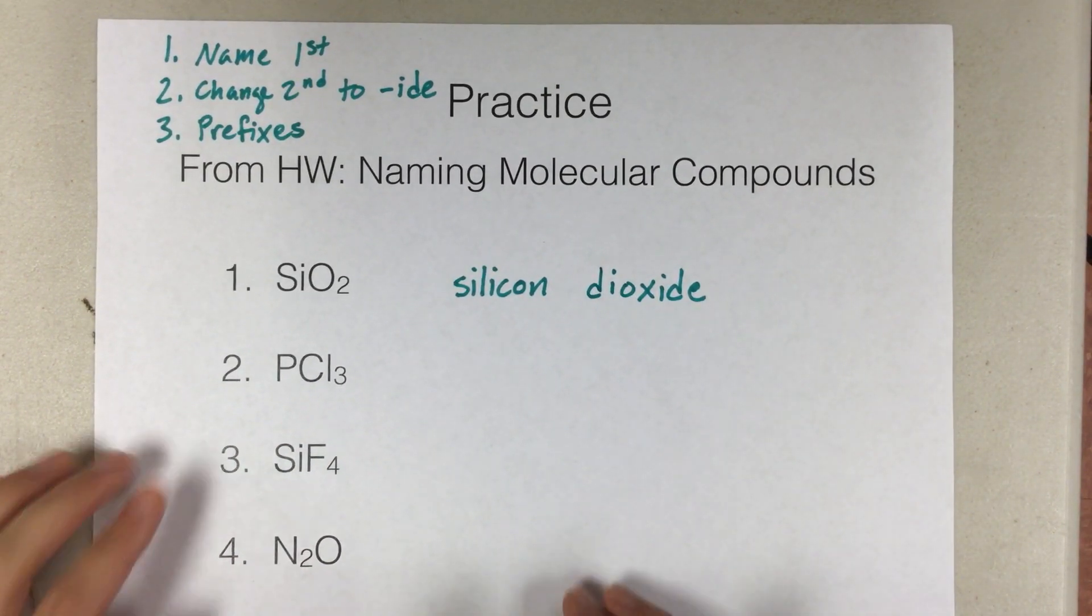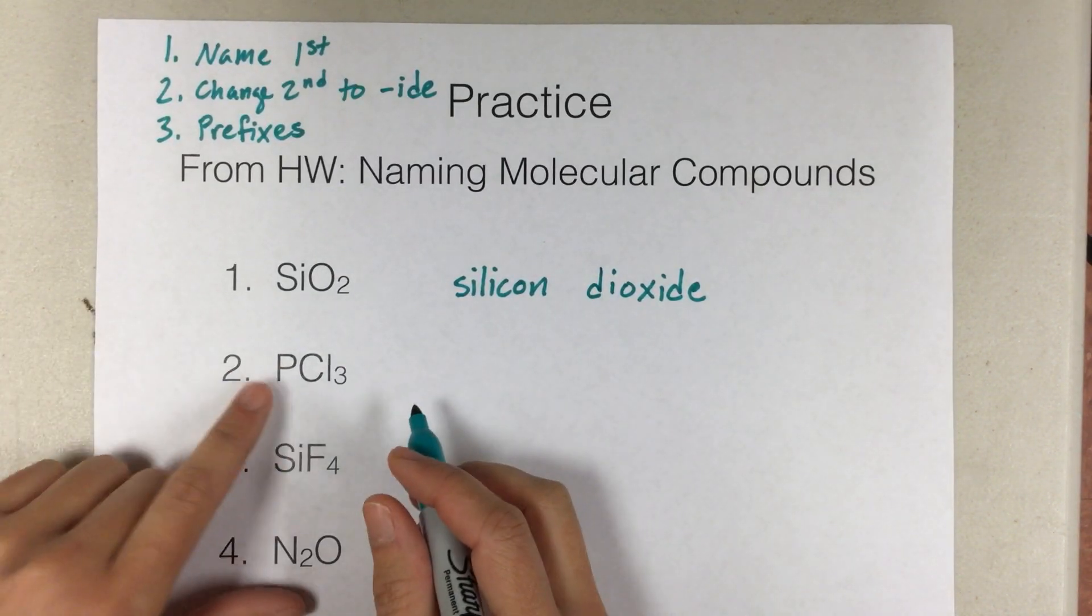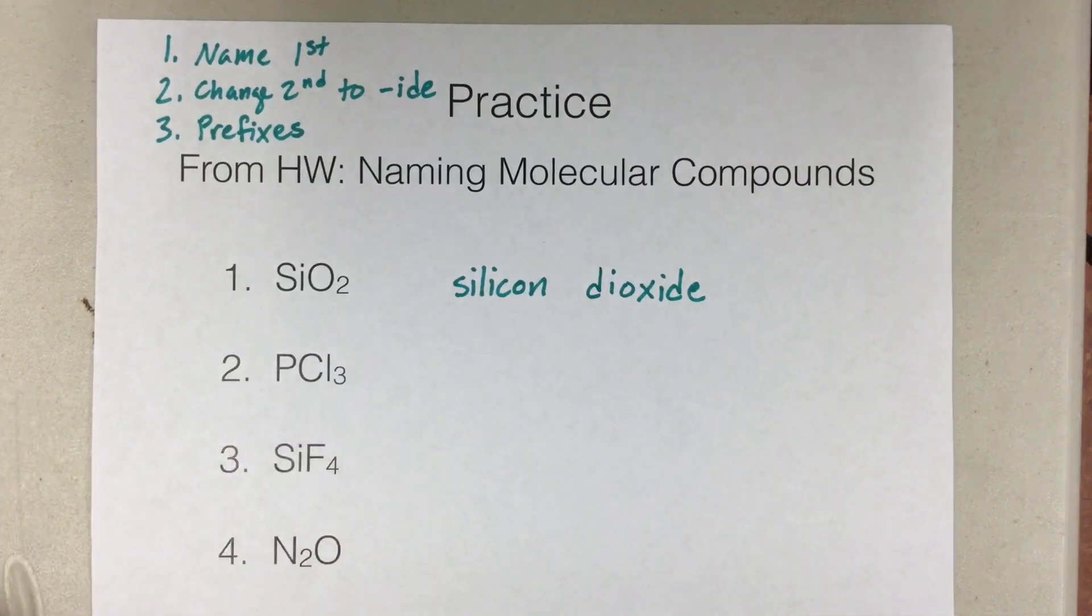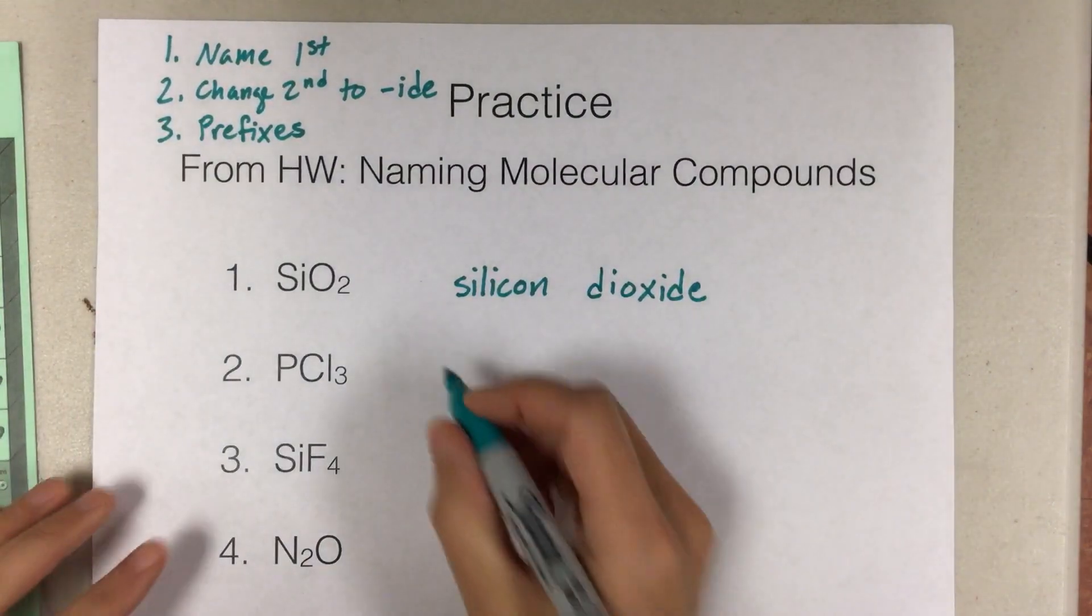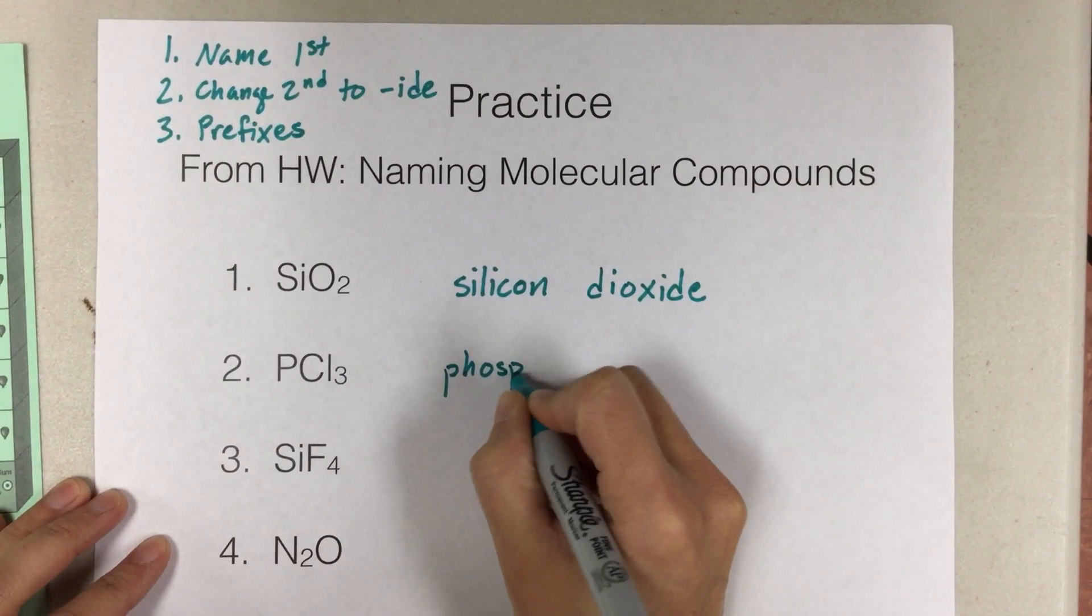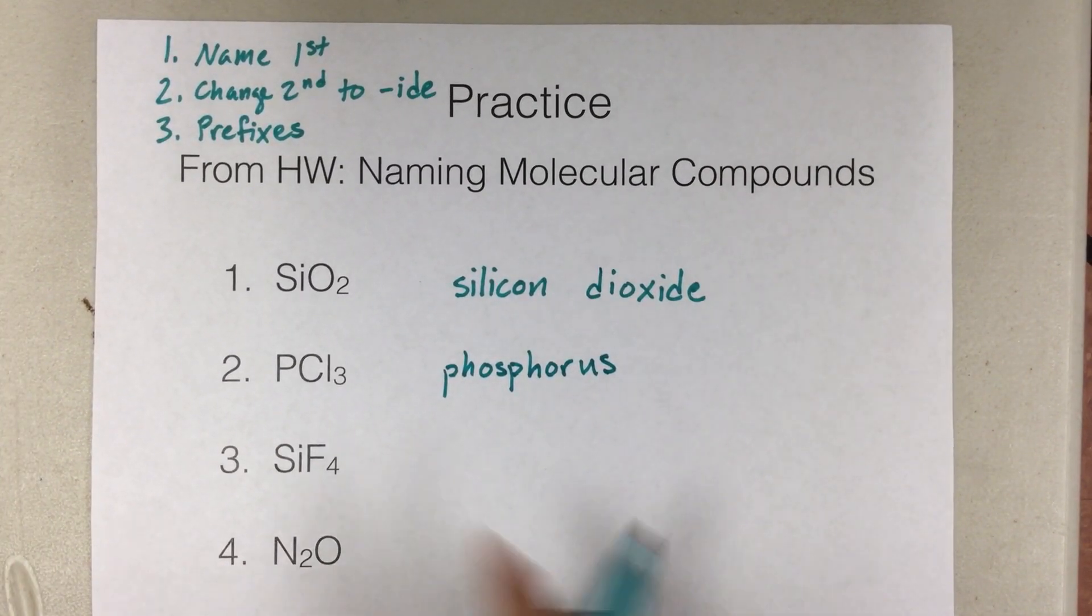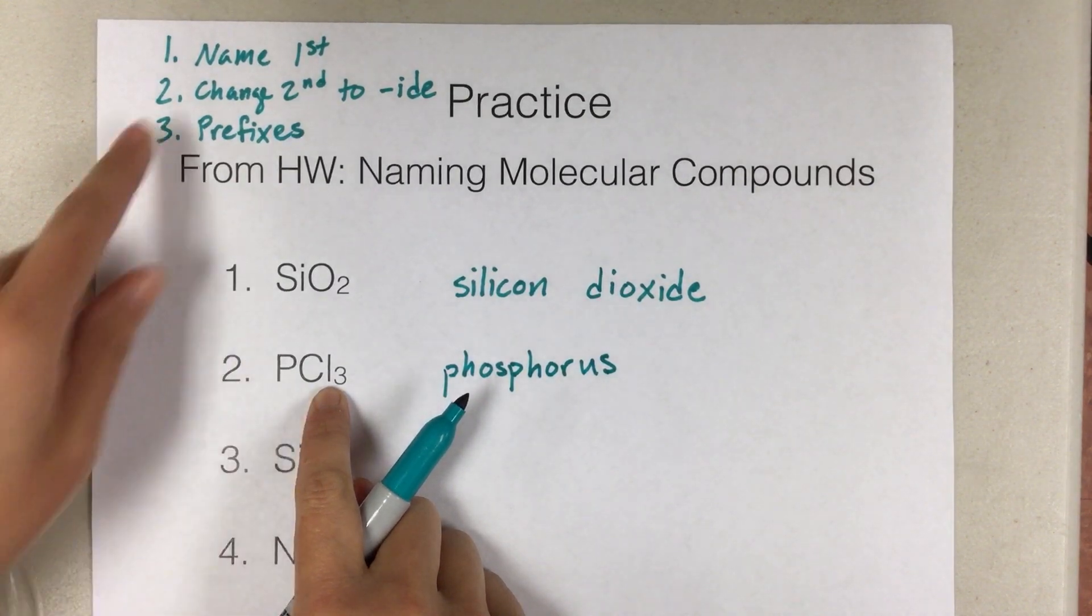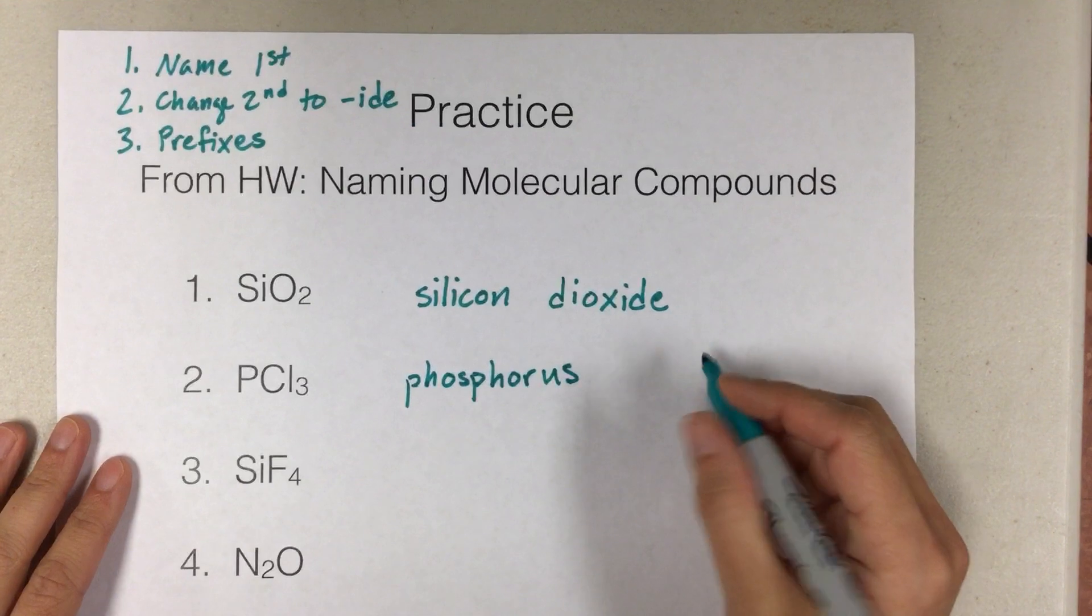All right, next one, number two, PCl3. So follow our steps. We'll name the first one. So P, again, if you forget what it is, check your periodic table. P is phosphorus. Make sure you get the spelling correct. So phosphorus. And then Cl is chlorine. But remember, we need to change the second one to -ide. So it's going to be chloride.